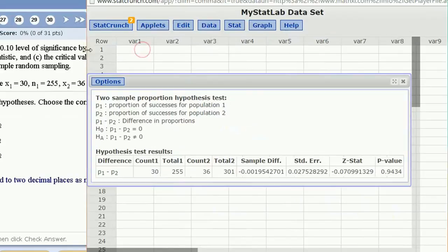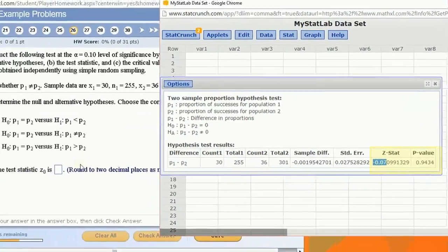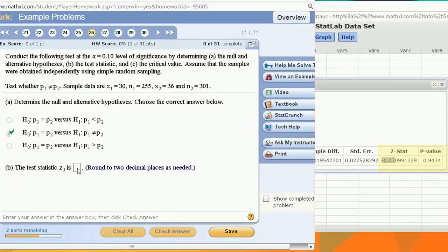We're going to get a P-value as well as a test statistic. So it's first asking for the test statistic. That's negative 0.07. Let's bring it over here.